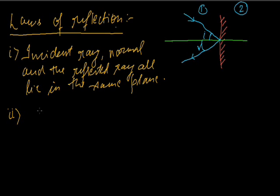The second point is angle i equals angle r. Angle i is the angle made by the incident ray with the normal, and angle r is the angle made by the reflected ray with the normal. Both these angles will always be equal. I would like to point out that these laws of reflection are always applicable, whether it is a plane mirror or any spherical mirror. These two laws of reflection are the same and are applicable for all types of reflection.